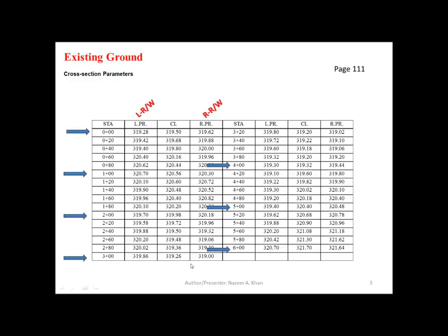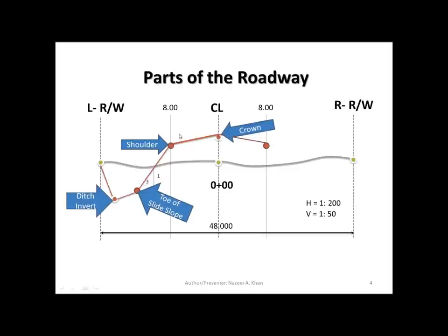When we look at our existing ground information, we are going to be plotting every full station. Zero is considered to be a full station, so we're going to plot 0+00, 1+00, 2+00 — every 100 meters we're going to plot a cross section. What we have is the left right-of-way limit, centerline, and right right-of-way limit. These columns are given information for the existing ground.